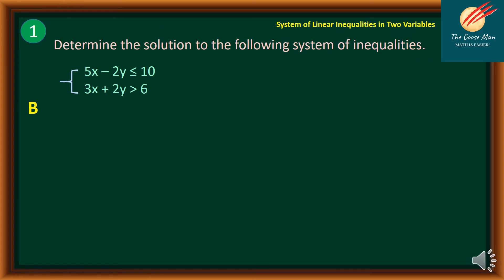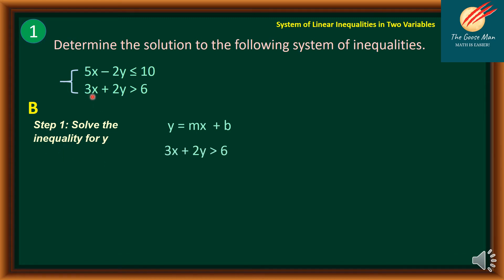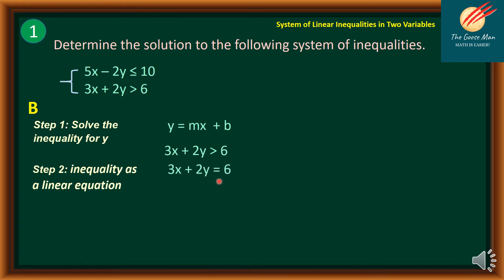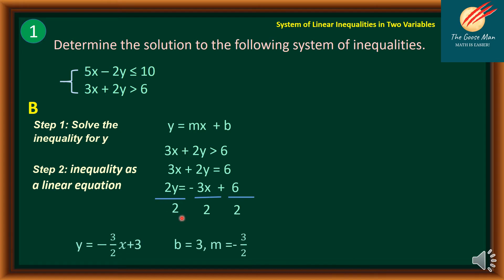For step number 4, we repeat the steps for 3x plus 2y > 6. Solving for y: treat it as 3x + 2y = 6. Subtracting 3x from both sides gives 2y = negative 3x + 6. Dividing both sides by 2: y = (negative 3/2)x + 3. So the y-intercept b = 3 and the slope m = negative 3 over 2.